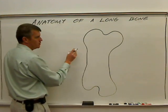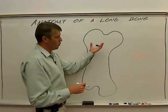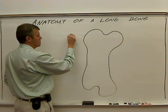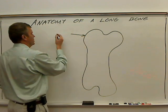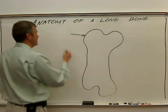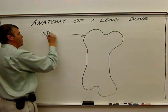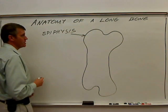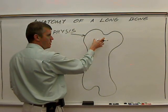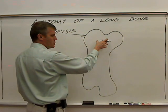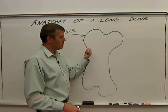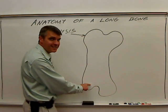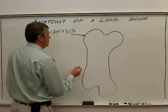Looking at the outward features: notice at the end of a long bone you'll have a widened area at each end. These are called epiphyses — epiphysis. If this were the end of the long bone closer to the torso, you would call this the proximal epiphysis, and then the other one would be the distal epiphysis. So that's epiphysis.